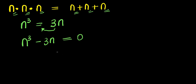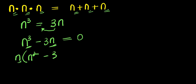What we are going to do next is factor out n, because there is n here and there is also n here. So we factor out n and open our brackets. n³ divided by n gives you n², then we bring down the minus sign. 3n divided by n gives you 3, and this equals zero.